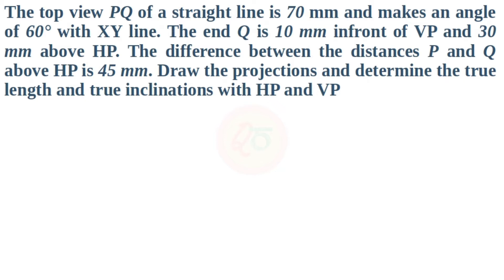We will look into the last problem on projection of lines which states: the top view of PQ, a straight line, is 70 mm and makes an angle of 60 degrees with XY line. The end Q is 10 mm in front of VP and 30 mm above HP. The difference between the distances of P and Q above HP is 45 mm. Draw the projections and determine its true length and true inclinations with HP and VP.